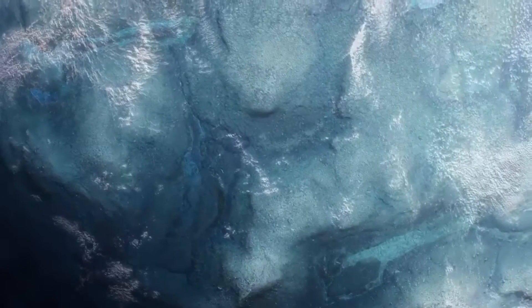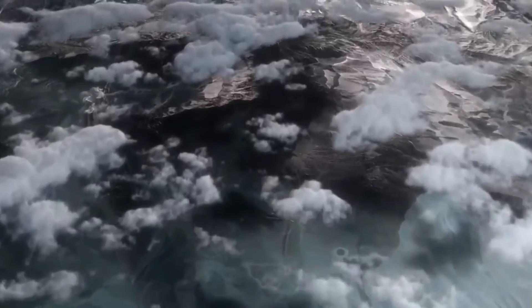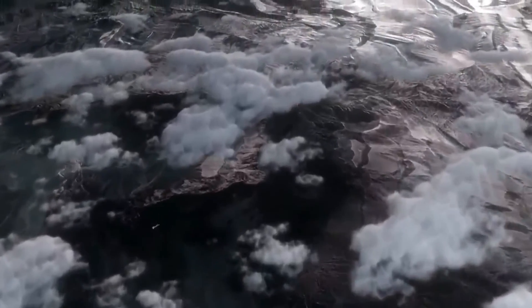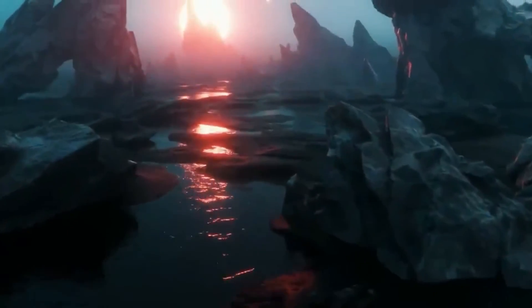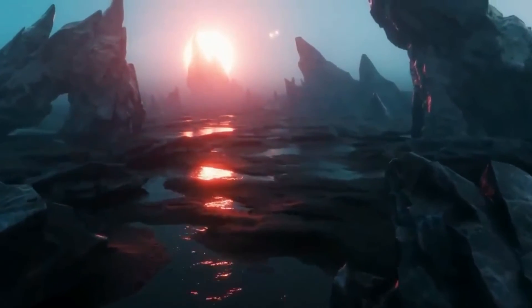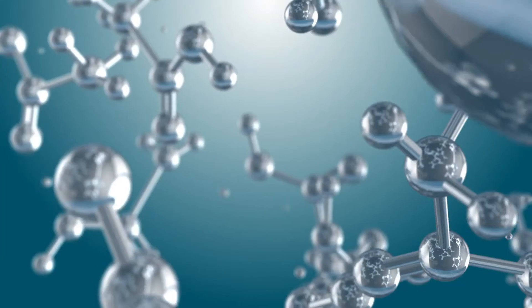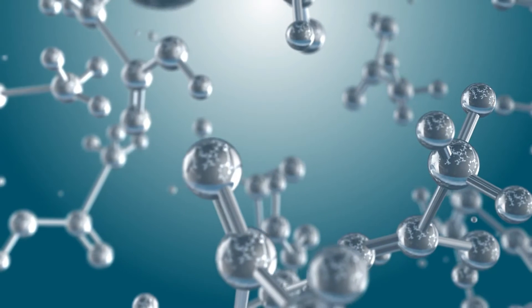There are two possible outcomes for the atmosphere of Proxima Centauri b. In one, the water on the planet condensed and the hydrogen was lost to space, leaving only oxygen and or carbon dioxide.